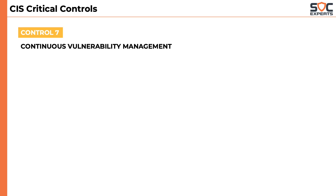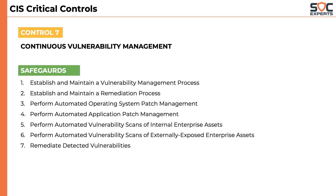We are now discussing the seventh control, which is continuous vulnerability management. In past lessons, we have learned that vulnerabilities exist in operating systems, applications, and configurations. These vulnerabilities have to be identified and patched on a regular basis. There are seven safeguards in this control that highlight the vulnerability management lifecycle.